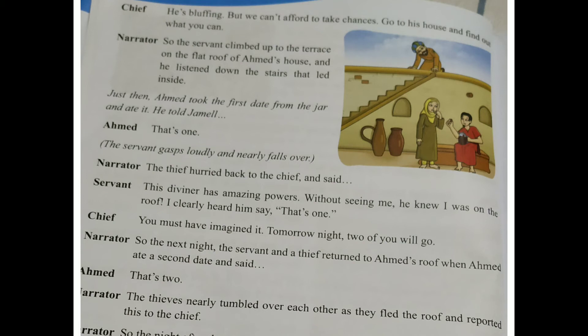The first thief saw Ahmed take a date from the jar and eat it. Ahmed told his wife: 'That's one.' The servant gasped loudly and nearly fell over — shocked that without seeing him, Ahmed could tell he was there. The thief hurried back to the chief and said: 'This diviner has amazing power — without seeing me he knew I was on the roof. I clearly heard him say that I am one.'